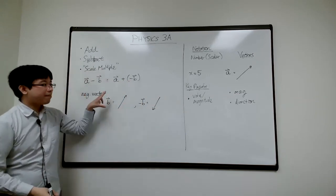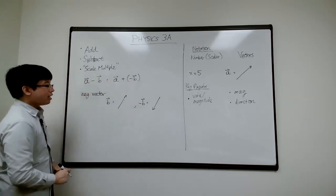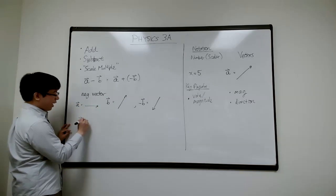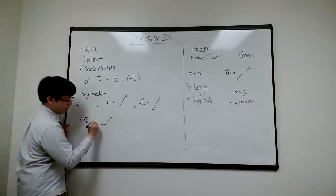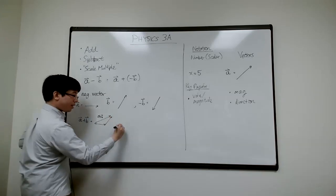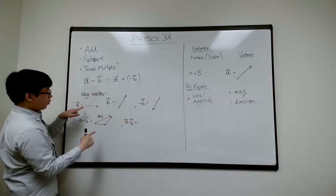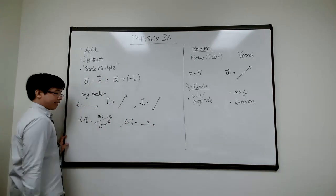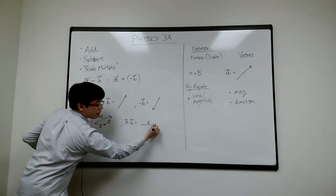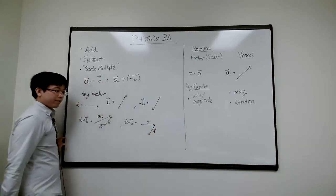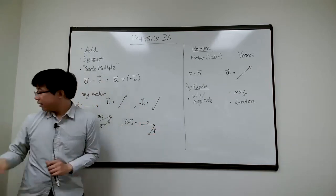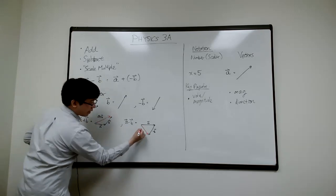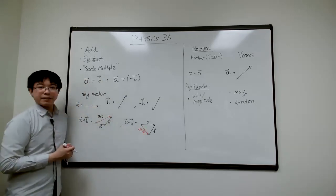If B looks like this, then negative B is the same magnitude or same length but pointing the other way — that's negative B. So A plus B is just connecting the two arrows head to tail. For A minus B, I connect A head to tail with negative B, which points the opposite direction. The new arrow that results is the vector A minus B.